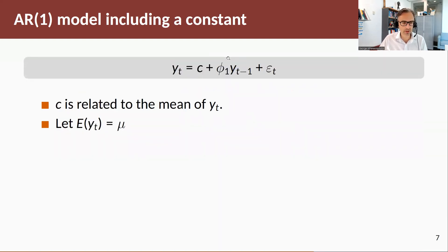Let's think about the mean, the unconditional mean of this AR1 process. The constant is related to the mean, but it's not the mean itself. For a stationary process, I can take expectations. The expected value of y_t is mu, the expected value of a constant is that constant, and the expected value of epsilon is zero. Rearranging, you see that the mean equals c divided by 1 minus phi_1.